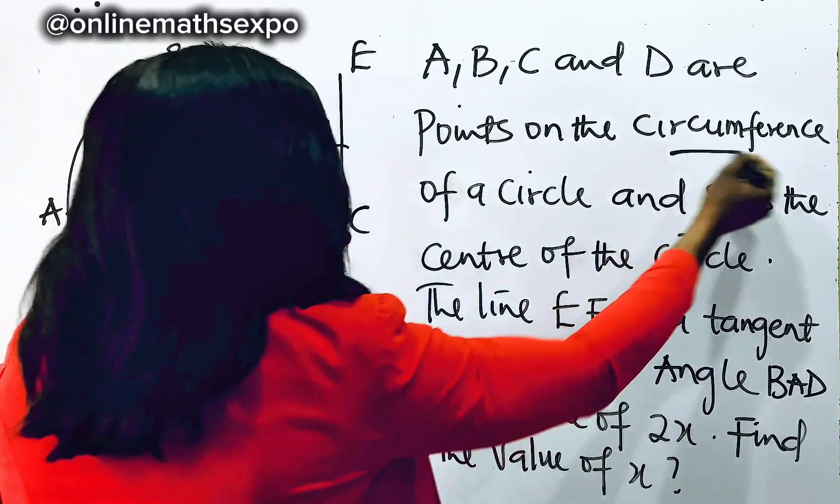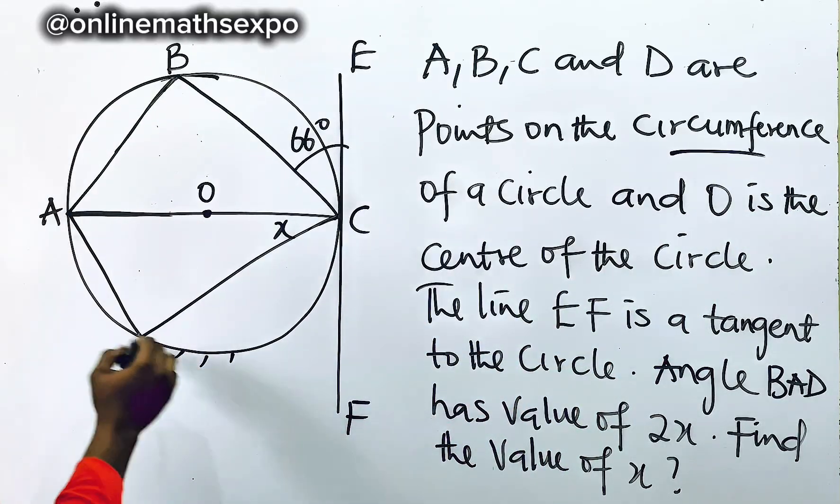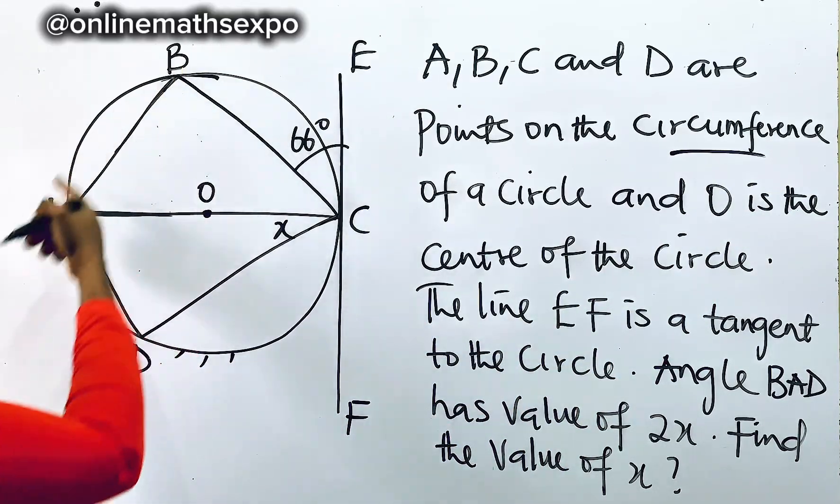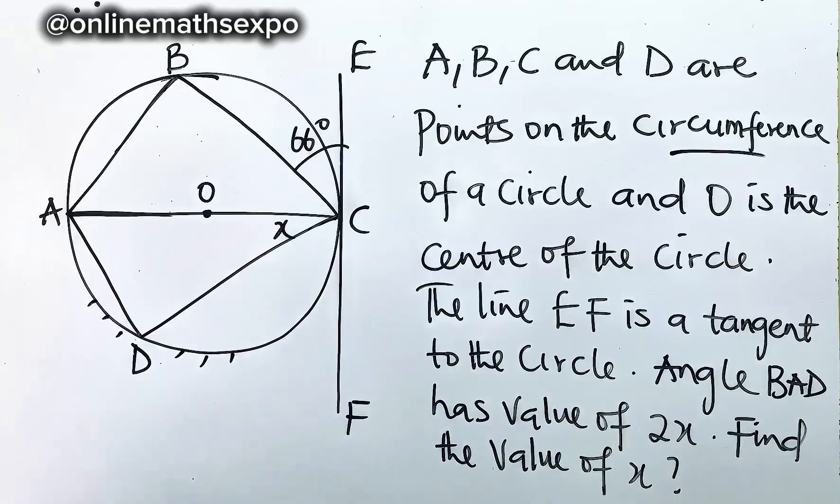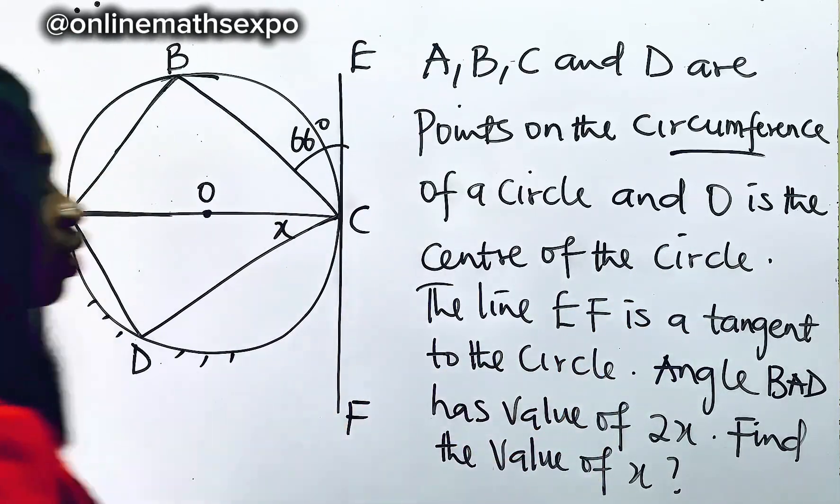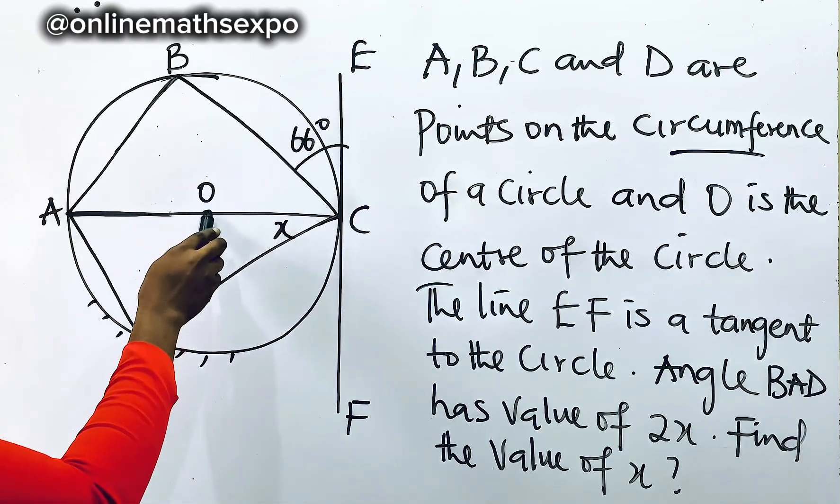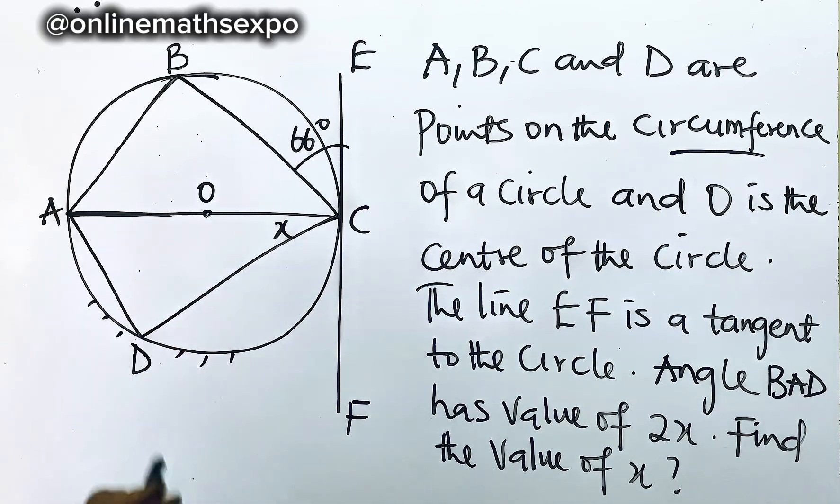Remember the circumference is simply the outer part of the circle. So you've seen that those points are on the outer parts of the circle. And we are told that O is the center of the circle. So you see where O is? This shows that here becomes the center.